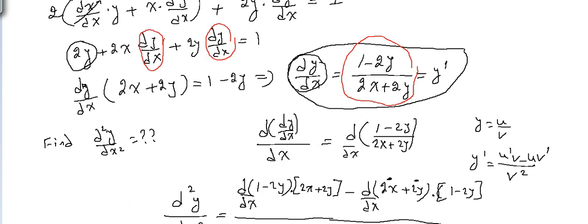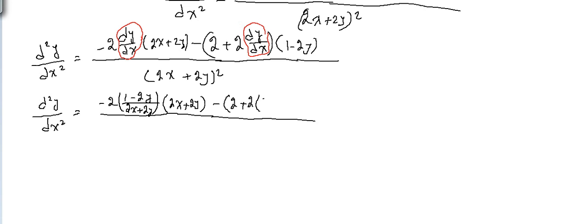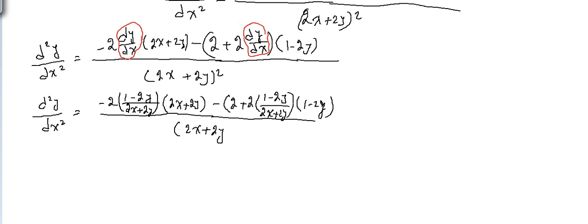So we just substituted here: 1 - 2y over 2x + 2y, into 2x + 2y again, multiplied with minus 2, plus 2 times (1 - 2y). Then dy/dx is (1 - 2y) over (2x + 2y), into (1 - 2y) over (2x + 2y) to the power 2.